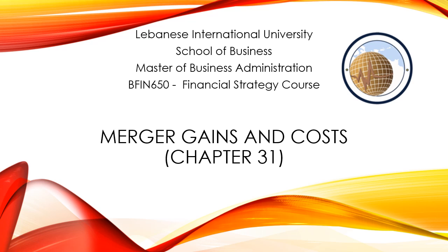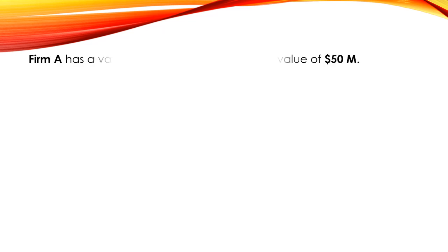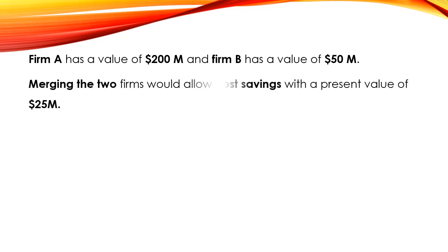In this video we are going to show you how to determine the gains and costs for a merger. Firm A has a value of 200 million dollars and Firm B has a value of 50 million dollars. Merging the two firms will allow cost savings with a present value of 25 million dollars.